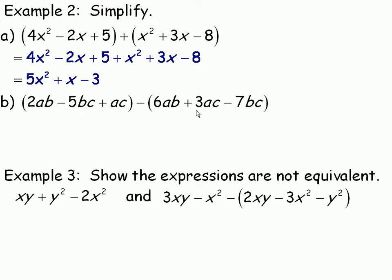In the second example here, b, in example 2, we're subtracting this polynomial and this one. So 2ab minus 5bc plus ac will stay exactly the same. And we're subtracting this polynomial. So when you remove the brackets, it's like there's a negative 1 here. And the negative 1 multiplies by all the terms.